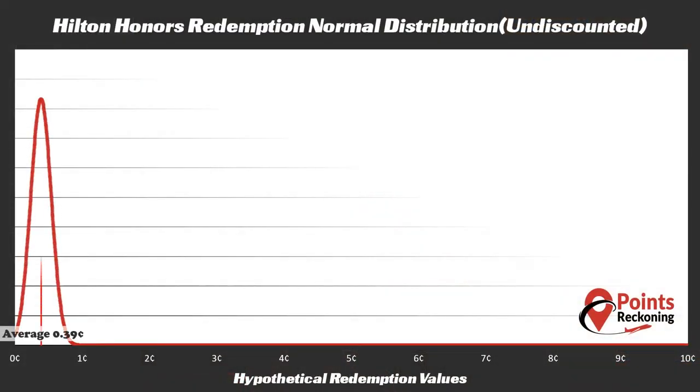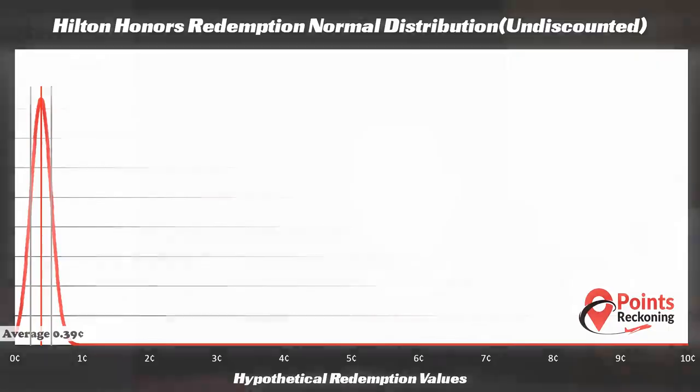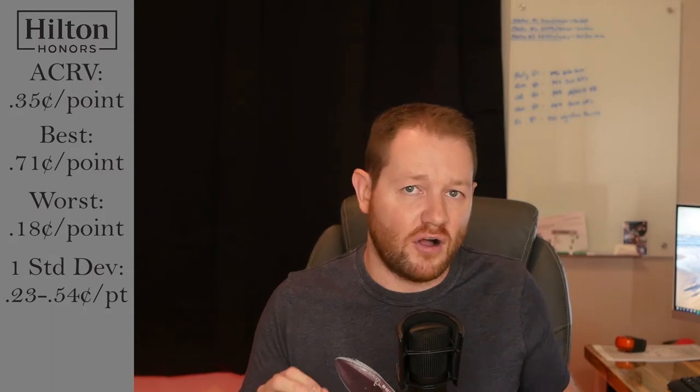If these two represent the best and worst we could do, what about everything else? For that, we'll take a look at our normal distribution — or the bell curve. This chart represents the likelihood of a given value relative to others. In the case of Hilton Honors, it presents as a very narrow peak, meaning there isn't much variability in redemption rates. Going one standard deviation in either direction gives us an undiscounted range of .23 to .54 cents. Using the empirical rule of statistics, we can say that 68% of all hypothetical redemptions should fall in this range.